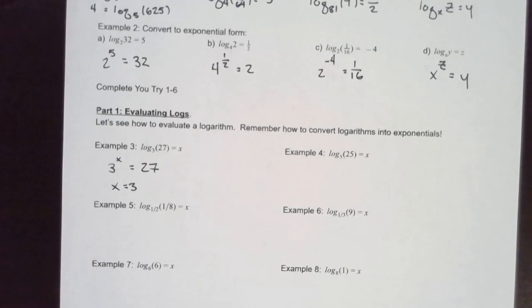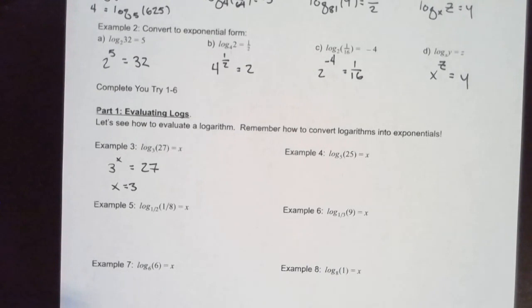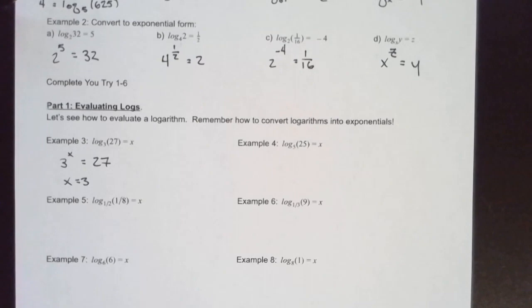This is where being familiar with common exponentials comes in handy. 3 to what power equals 27? That's 3 to the third power. If you don't know these off the top of your head, it would be useful to use a calculator and guess and check — 3 squared gives you 9, multiply by another 3 and you get 27. There is no strict algebraic way to solve these.